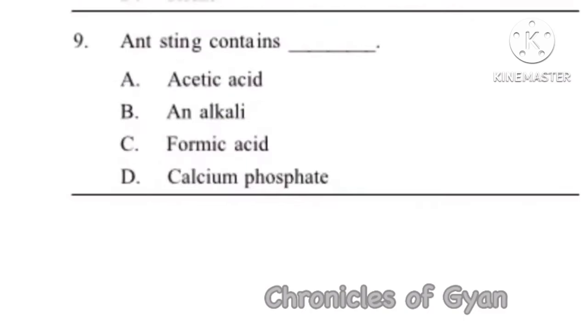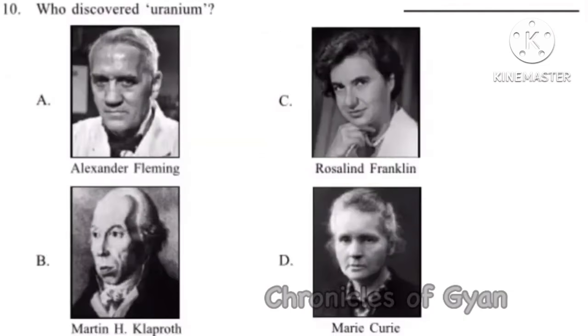Question 9: Ant sting contains what? Formic acid, also known as methanoic acid, is present in the ant sting.